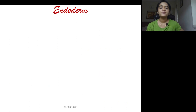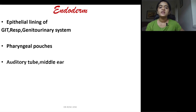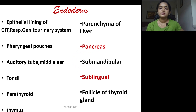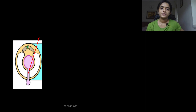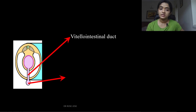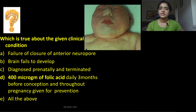Further mesoderm derivatives include spleen, kidney, dura mater, and the nucleus pulposus of the notochord. Endoderm lines the GI tract, respiratory tract, and genitourinary system, and gives rise to pharyngeal pouches, auditory tube, middle ear, tonsils, parathyroid, thymus, liver parenchyma, pancreas, submandibular and sublingual glands, and thyroid follicles. The vitello-intestinal duct connects the yolk sac to the gut during folding; the yolk sac is where primordial germ cells and early blood cells and vessels form.